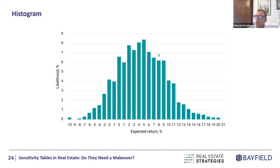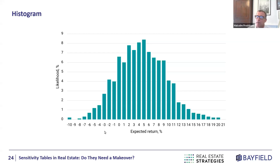One of the nice things about a histogram is you can clearly see the likelihood of extreme values — it's relatively small but it is there. It shows that being in the extreme is perfectly possible. Just because something is unlikely doesn't mean it's not possible, and the last few years has certainly shown that.